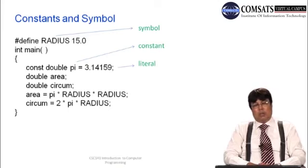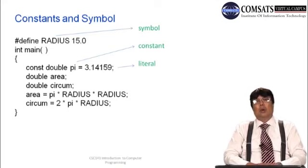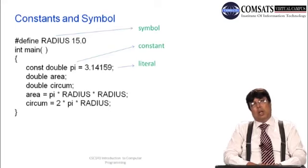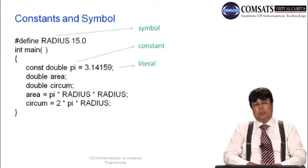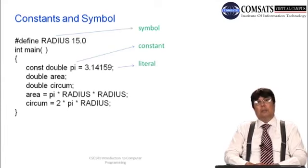Wherever radius appears, the preprocessor replaces it with 15.0. Wherever pi appears, there will be 3.14159. Why use named constants if the preprocessor will replace them anyway? The answer is to make the program more readable — when someone reads your source code they can quickly see that you are using 15.0 as a radius and computing circumference with the formula 2πr and area with πr².